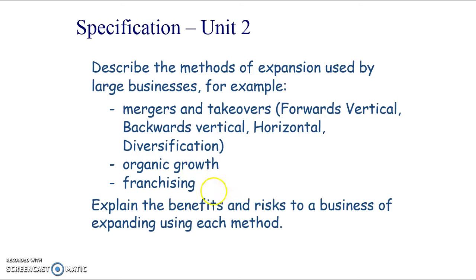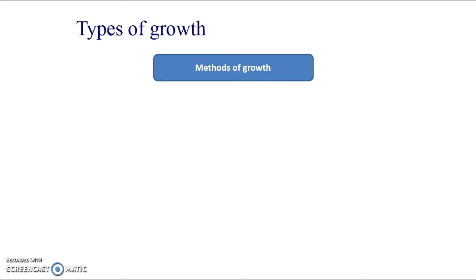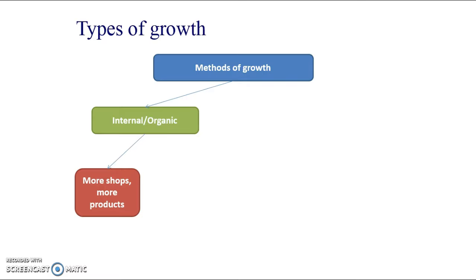There will be some specific benefits and risks, but remember from the last presentation the slide covering the benefits of growth - those are going to be similar for all types of growth, so don't be afraid to use those generic benefits. Here's the diagram: methods of growth. We've got internal or organic growth on one side, which could be through more shops, more products, or franchising. In unit one we looked at growth from an entrepreneur buying into a franchise as a franchisee.